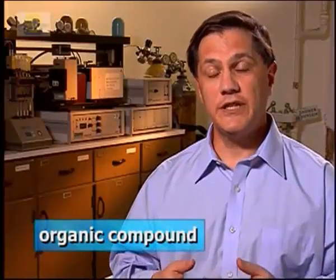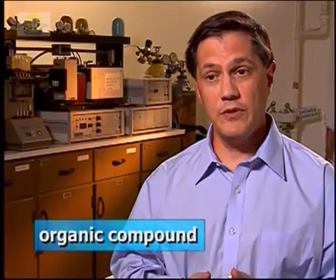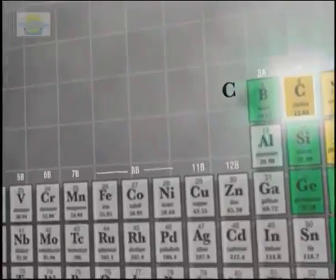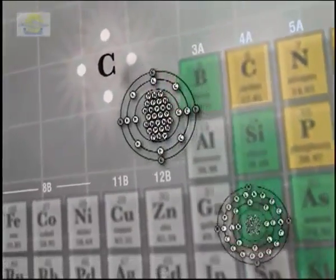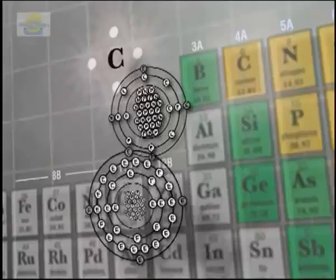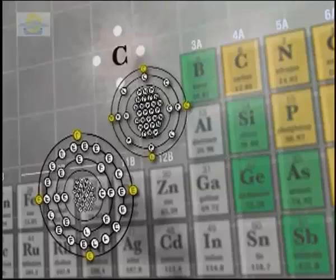An organic compound is a molecule that contains carbon — primarily, most of the weight is carbon — and generally will also contain some hydrogen atoms with it. Carbon's versatility is unique. While other group four elements also have four valence electrons, they cannot duplicate carbon's achievements.